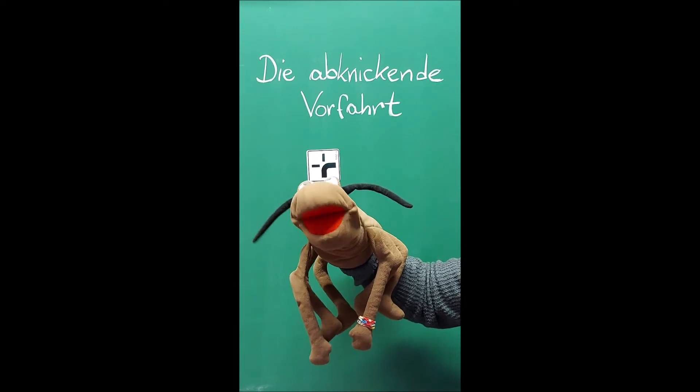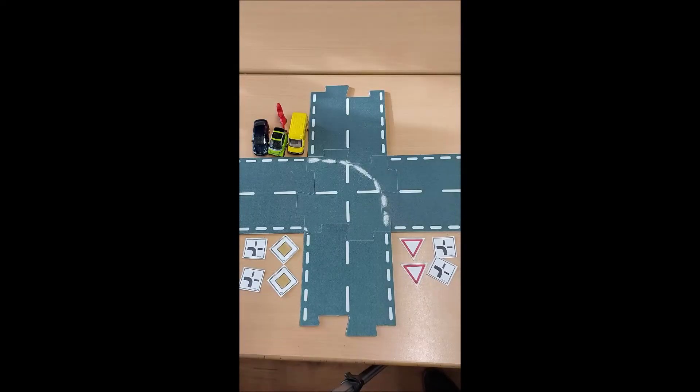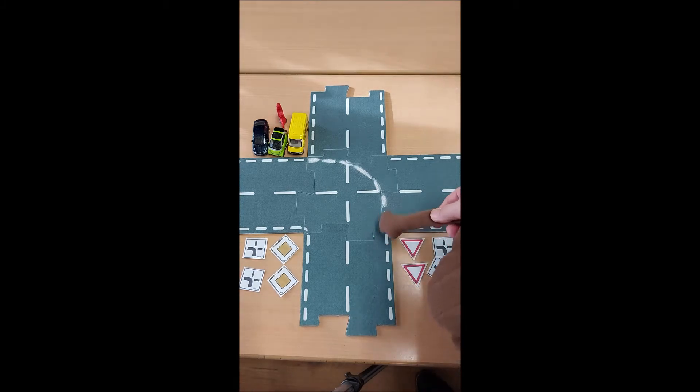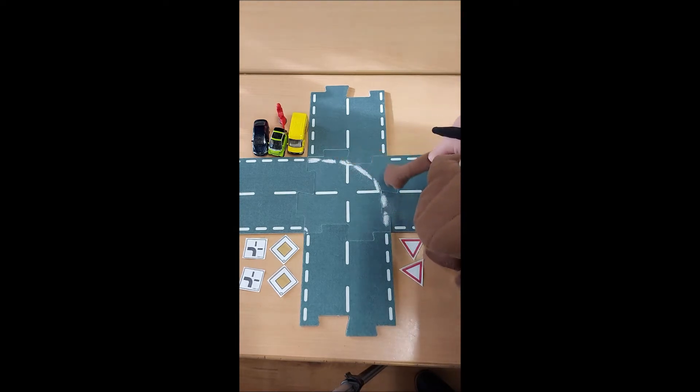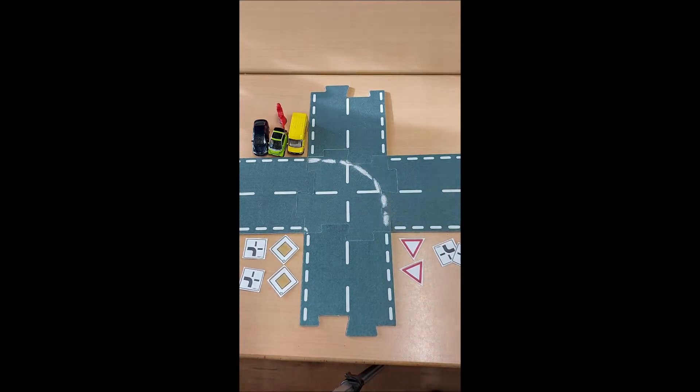Wir gucken uns mal eine Kreuzung an. Ich habe euch jetzt schon was vorbereitet. Schaut mal, eine Kreuzung ist das so. Und ich habe die Linie, die auf der Straße bei einer abknickenden Vorfahrt immer eingezeichnet ist, schon hingemalt. Da soll abgeknickt werden. Wie geht das jetzt? Jetzt müssen wir erstmal die Schilder verteilen.